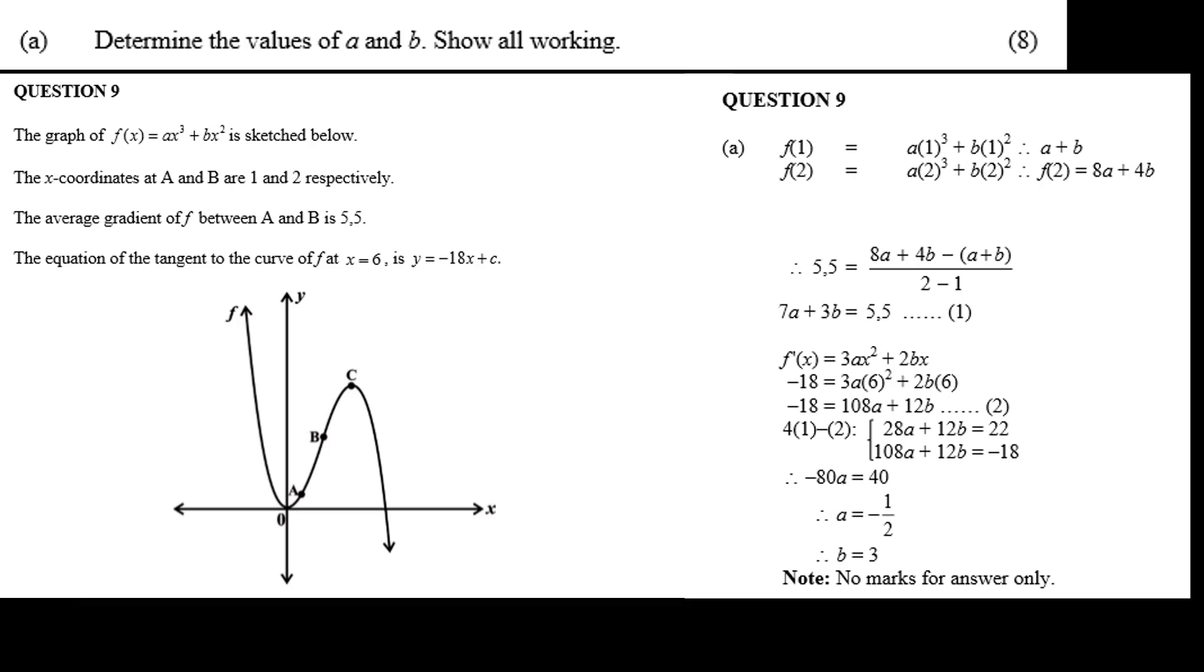Now that was a lot of work, so for 8 marks we should check it. Let's just calculate the values for a and b. f of 1 equals minus a half plus 3 equals 2.5. And f of 2 equals minus a half of 8 plus 3 times 4 equals 8. 8 minus 2.5 equals 5.5. So the function checks out for a and b.